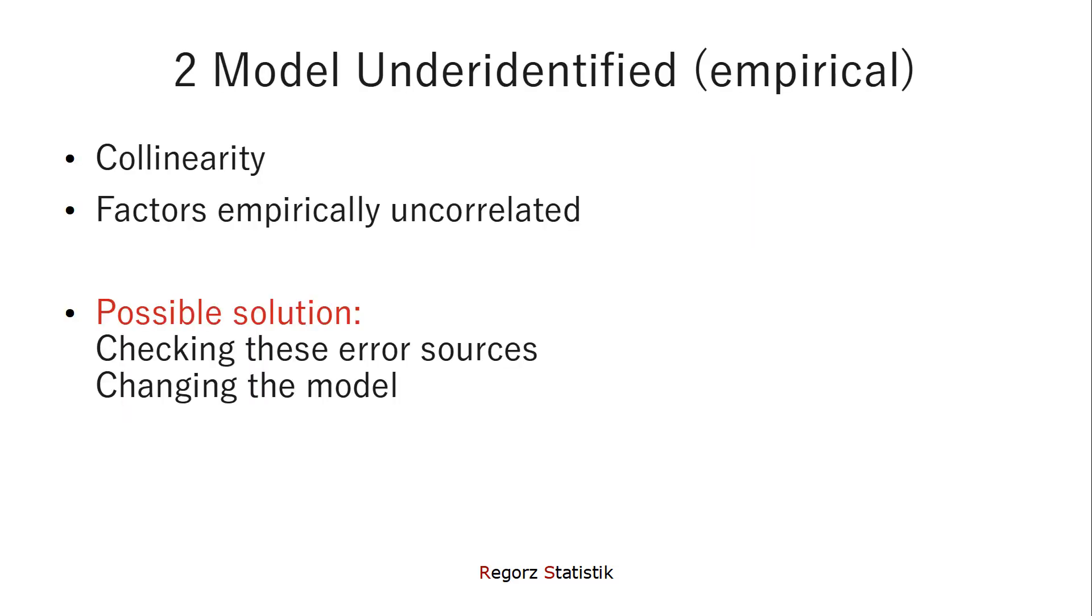So a possible solution? Check these error sources. And basically, that is looking at correlation tables. For the problem of collinearity, look at the correlations between items going into the same factor. If those are extremely high, and you only have a small number of items, let's say three items, then this could be a problem. And for the second problem with the empirically uncorrelated factors, look at the correlations between items of those two different factors. If those are nearly zero, then two factors, which you have assumed to be correlated, may be not correlated.